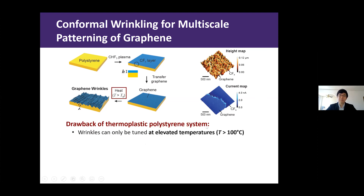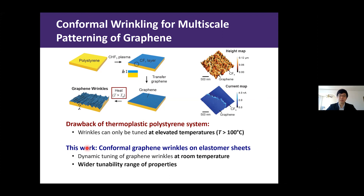However, the drawback of the thermoplastic polystyrene system is that we can only deform the substrate at elevated temperatures—around 100 degrees Celsius—which dramatically limits the tunability range of the graphene geometry under tensile strain of the substrate. So my work focuses on integrating this conformal wrinkling process into an elastomeric substrate, which enables dynamic tuning of the graphene wrinkles by simply mechanically stretching the substrate at room temperature, and that will allow us to expand the tunability range of the graphene properties. However, preserving the mechanical integrity of graphene remains challenging because we cannot guarantee the mechanical robustness of the graphene-fluoropolymer composite under high strains.